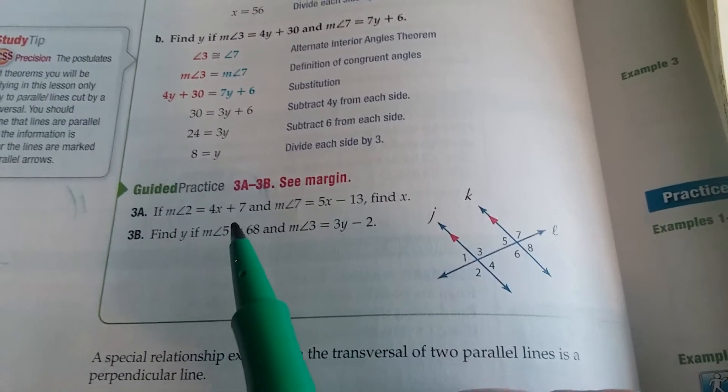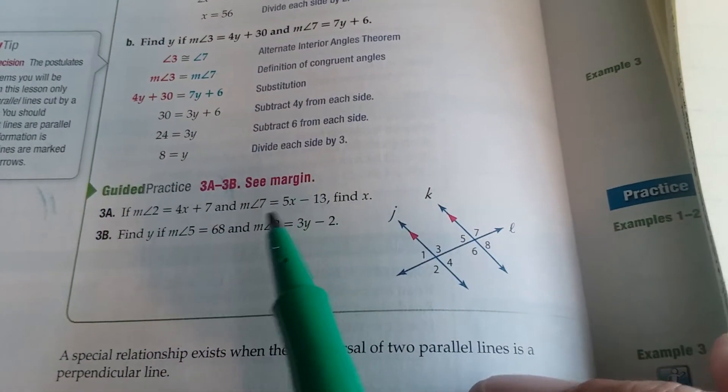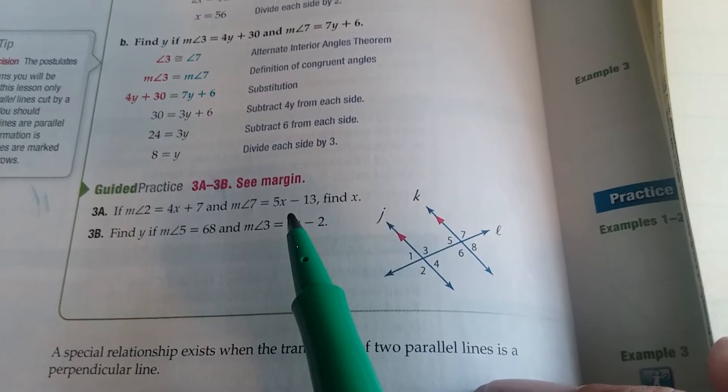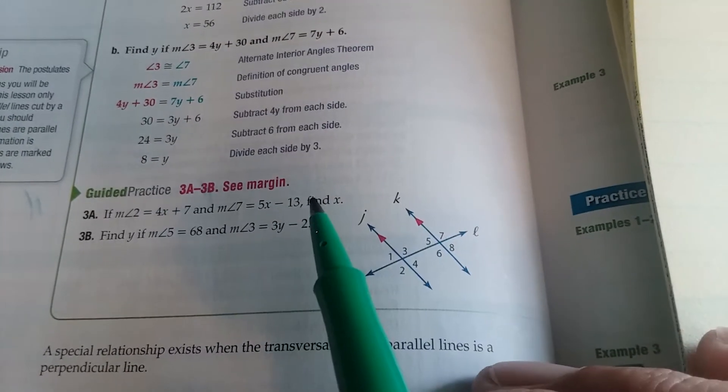So 3a, measure of angle 2 is equal to 4x plus 7 and the measure of angle 7 is 5x minus 13.